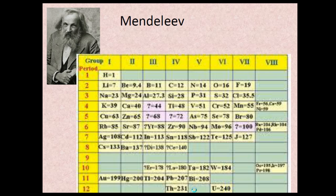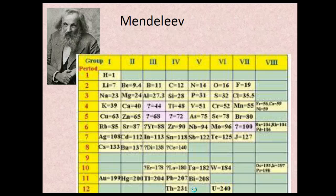Mendeleev originally sorted all the known elements into categories and groups based on physical and chemical properties.